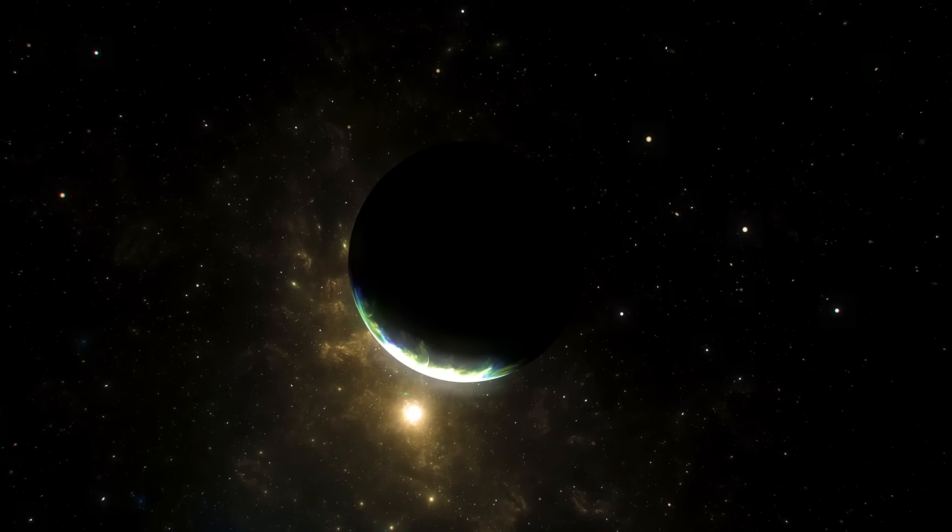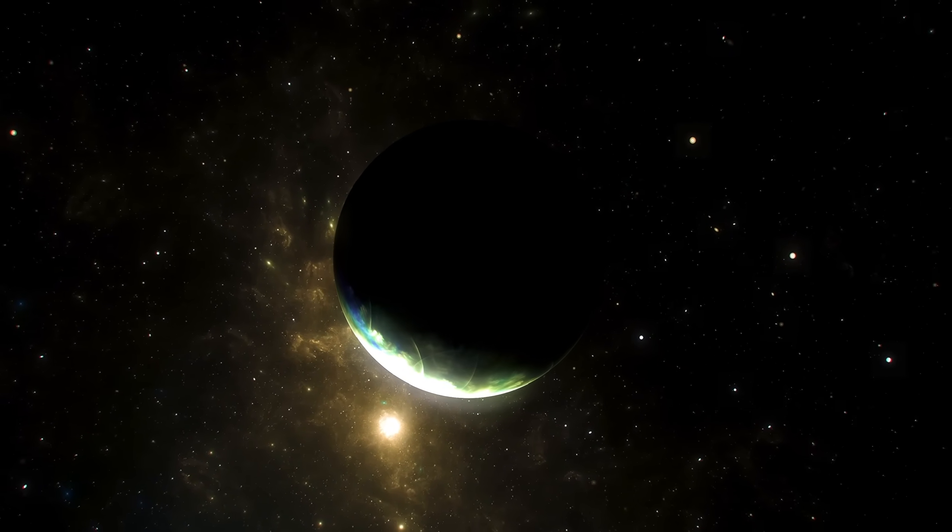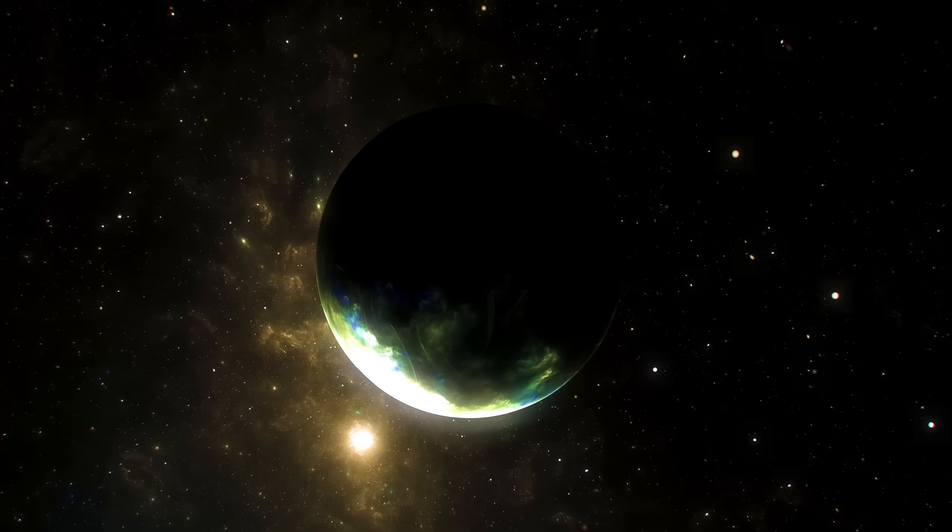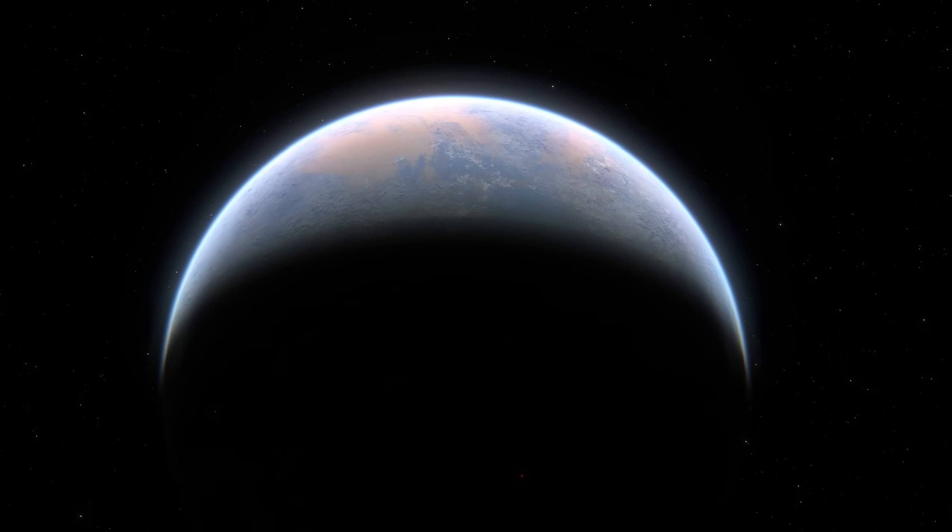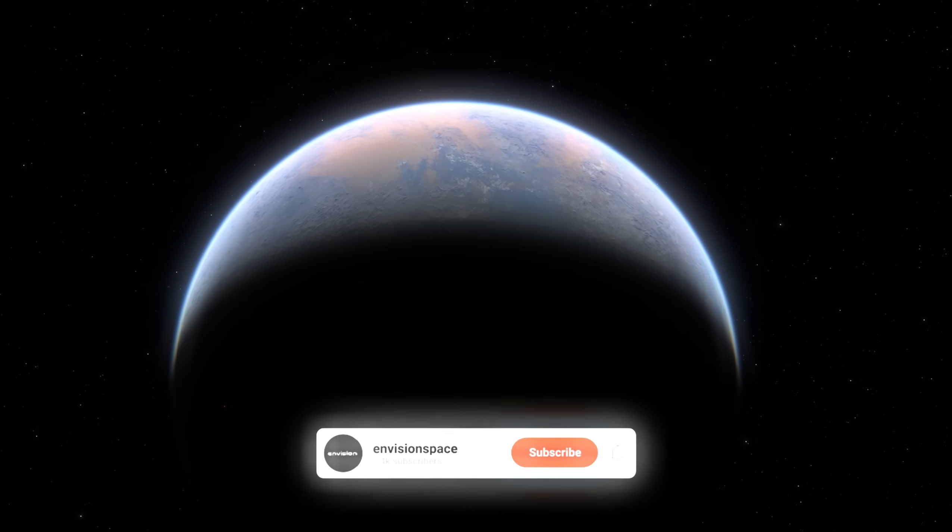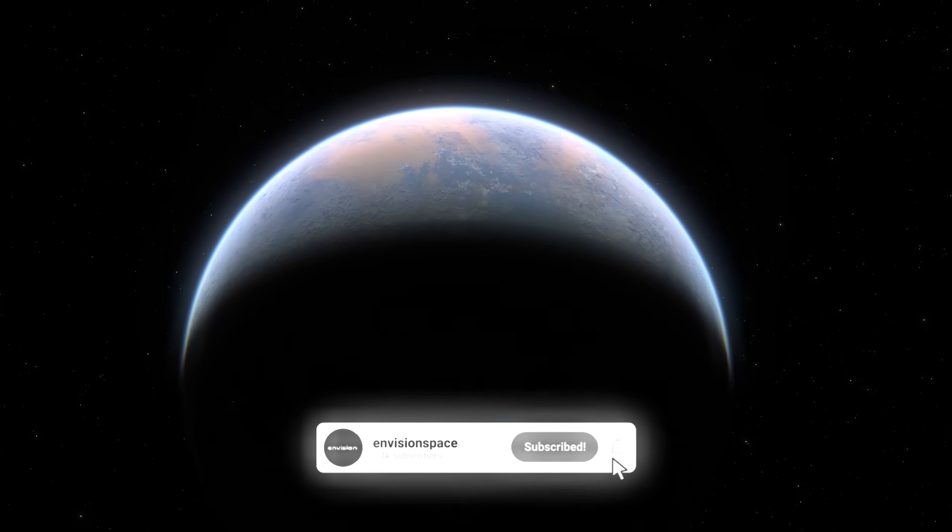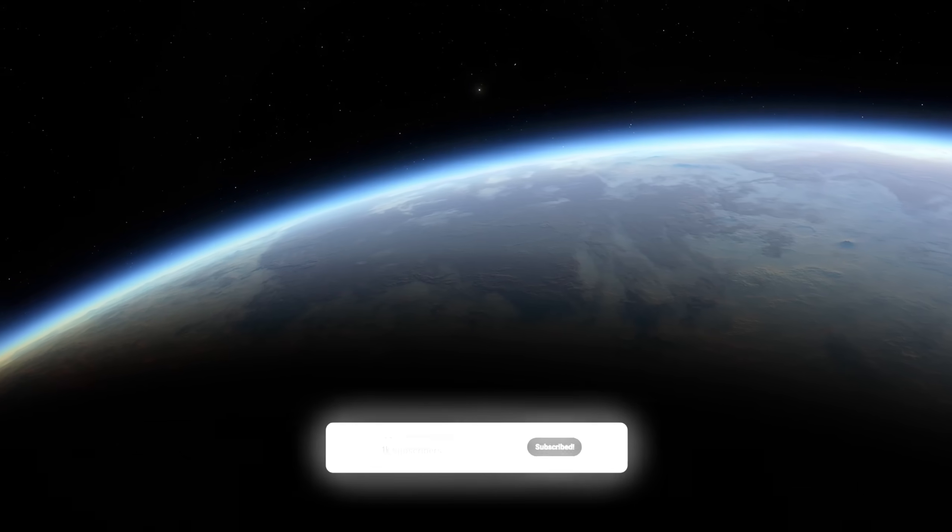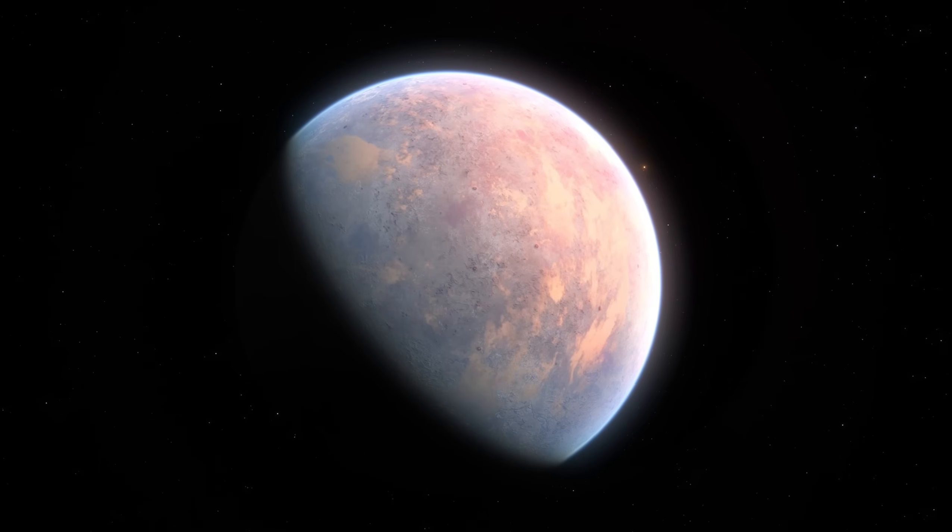We are only just beginning to understand how life might thrive in places that look nothing like Earth. Take extremophiles, for example: tiny organisms that survive in the harshest conditions, like boiling temperatures or highly acidic environments. If life can survive there, who's to say what might be possible on a world like Proxima B, with its extremes of hot and cold?